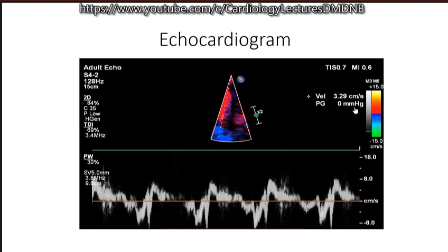In a patient having SAM and LVOT obstruction, the patient will be having MR — in all patients. In echocardiography, you get MR in 100% of HOCM patients with obstruction.